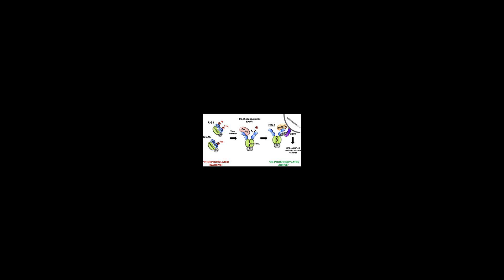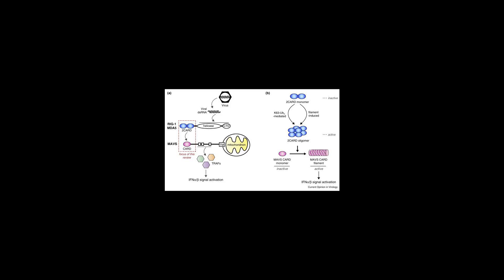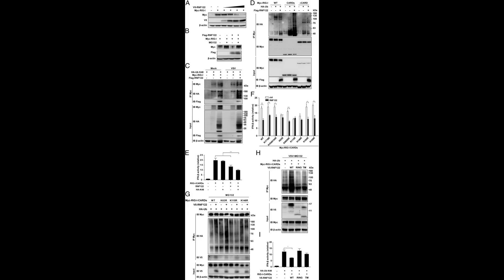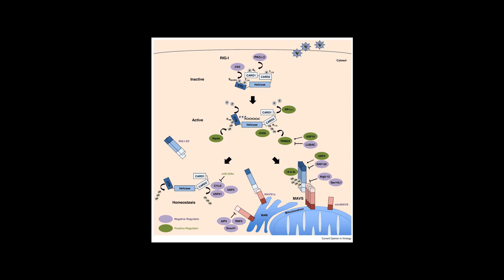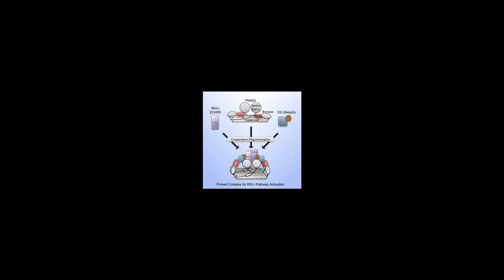LGP2 does not have CARD domains and therefore does not positively induce the same signaling pathway as RIG-I and MDA5. LGP2 also does not participate in viral detection. Instead, LGP2 modulates the other two RLRs through negative inhibition. It is known that LGP2 binds a repressor domain on the RIG-I C-terminal region to suppress RIG-I signaling and down-regulate the viral response.